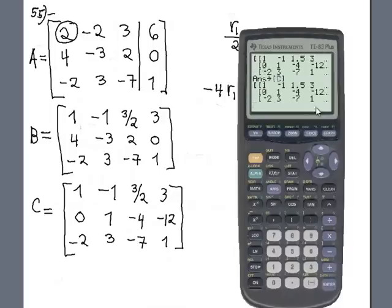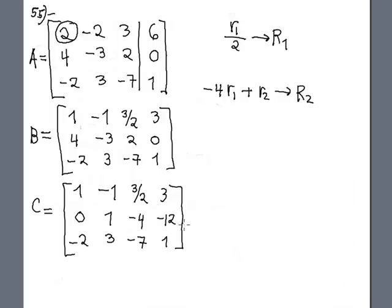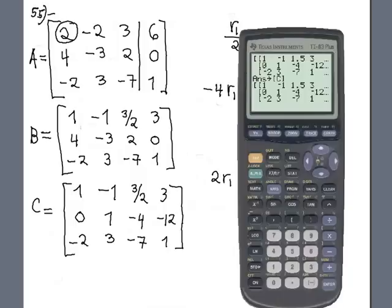Good, now let's analyze what is the next row operation. The next row operation, so I need 0 here. So basically it's the opposite, it's 2 R1 plus R3, and store this information in the new R3. Then clear, second trace, mathematics, function F.